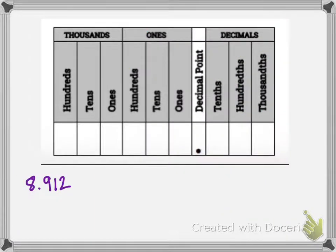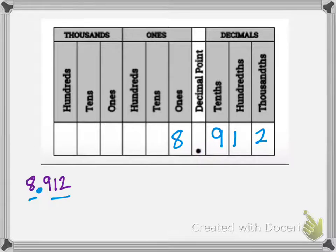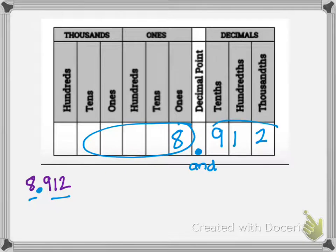Let's go ahead and try this one. First, place the number on the chart. Our eight goes in the ones place, then nine, one, and two is in the thousandths place. We just always check it with our decimal there. Then we're just going to say it: whatever's on the left side — eight. And. Then we say nine hundred twelve thousandths.